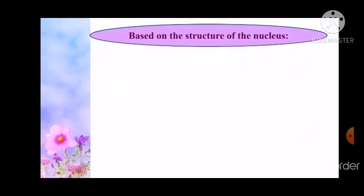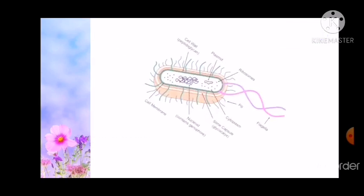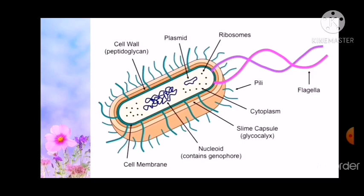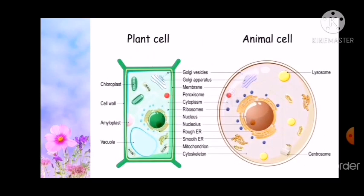Now we learn the classification of cells. First, based on the structure of the nucleus, there are two types: prokaryotic cell and eukaryotic cell. Prokaryotic cells are those cells lacking a nuclear membrane-bound, well-organized nucleus. Examples include bacteria, mycoplasma, and cyanobacteria. In this slide, you can see the bacteria cell, which is a prokaryotic cell. Eukaryotic cells are those cells having the nucleus surrounded by a membrane. Examples include animal and plant body cells. In this slide, you can see the eukaryotic cell.